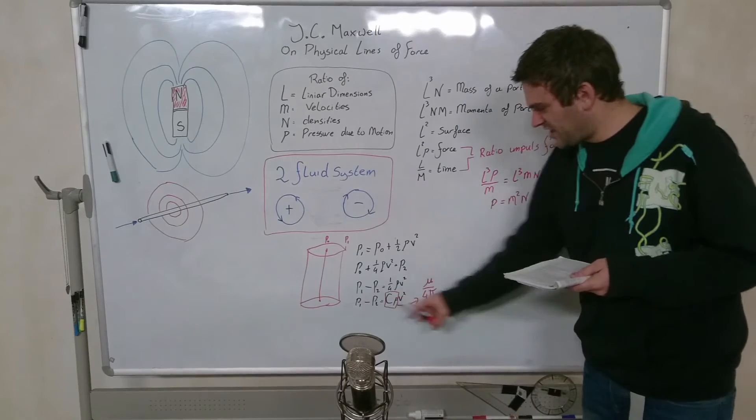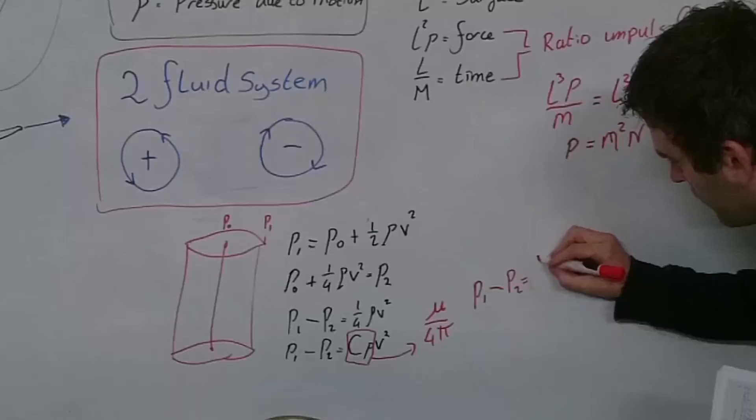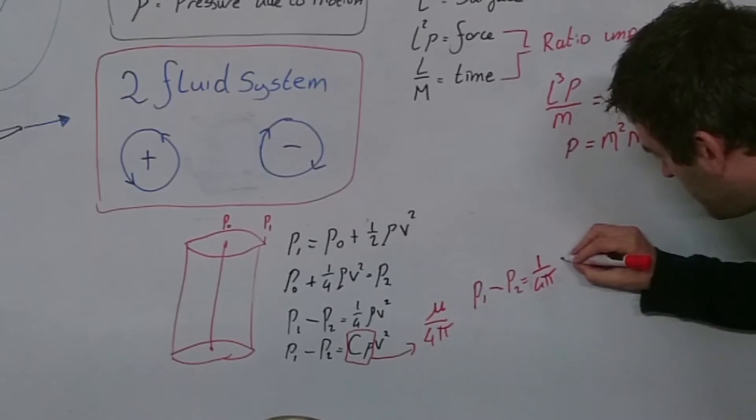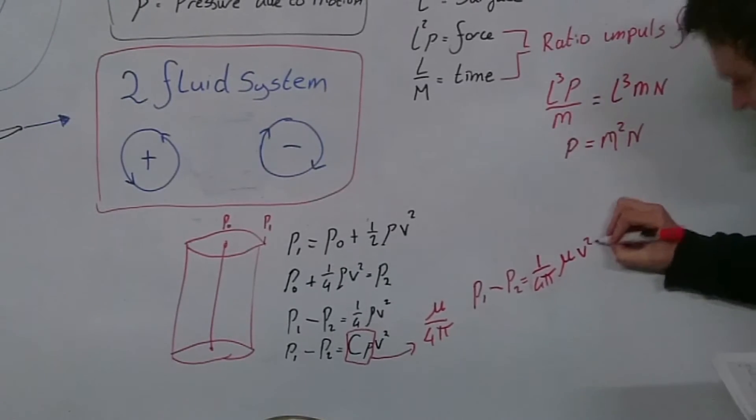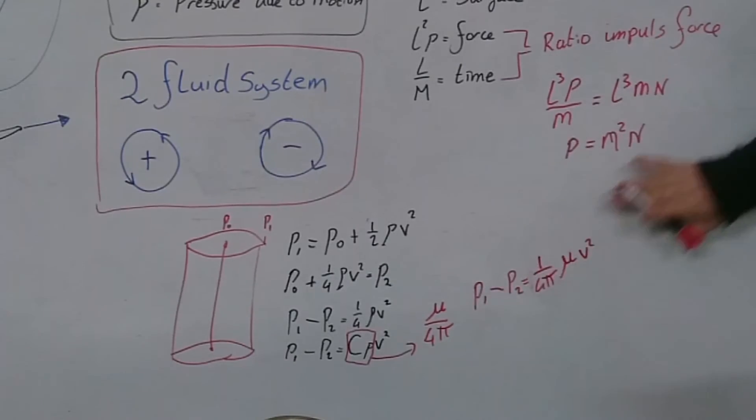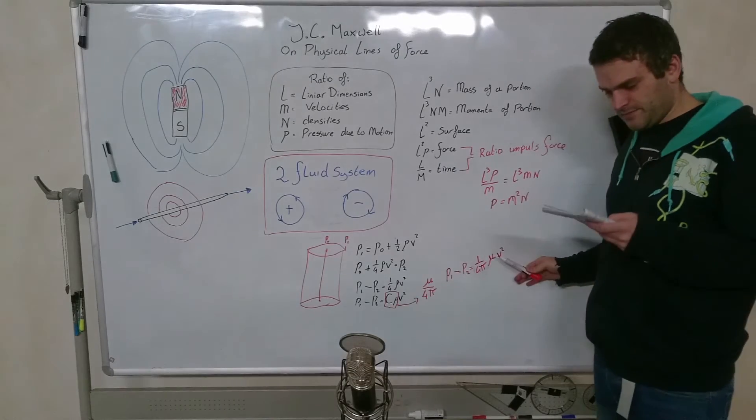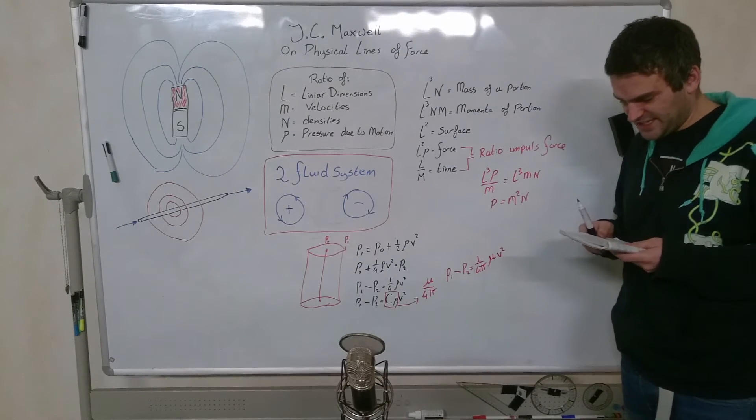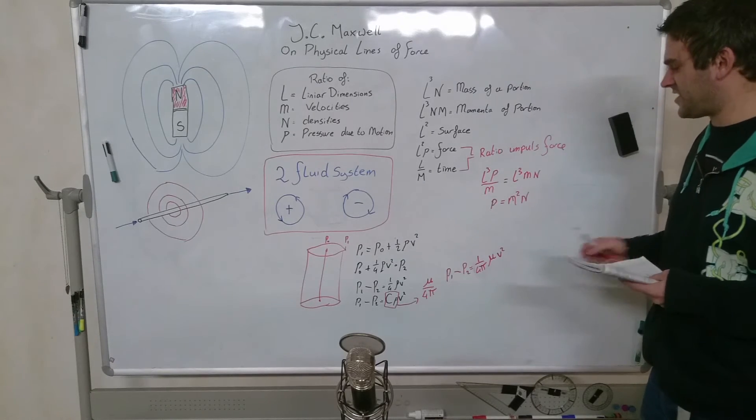So that this formula is going to change in a more convenient form. 1 divided by 4 pi, and then mu V squared. In this formula, the mu is a quantity bearing a constant ratio to the density, and v is the linear velocity at the circumference of each vortex.